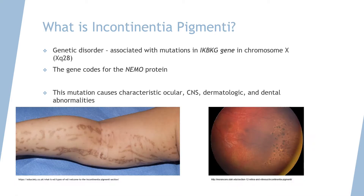One of those diseases that links dermatology and ophthalmology is incontinentia pigmenti. This is a genetic disorder caused by mutations in the IKBKG gene on chromosome X at arm Q28. This gene codes for the NEMO protein, which is a modulator of NF-kappaB and serves to activate inflammation and immune processes, as well as cell survival.